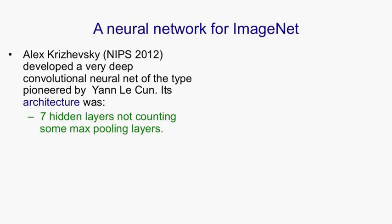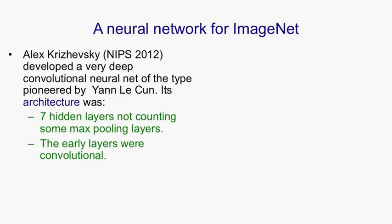It has seven hidden layers — deeper than usual, not counting some of the max pooling layers. The early layers are convolutional. We could probably get away with just local receptive fields without tying any weights if we had a much bigger computer, but making them convolutional cuts down parameters a lot, reducing the training data and computation needed. The last two layers are globally connected, with about 16 million parameters between each pair of those layers, looking for combinations of local features extracted by the early layers.